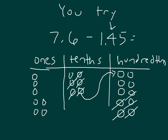For the tenths within the number we have 4 — 1, 2, 3, and 4. And in the ones place we have to take away 1 as well. That leaves us with 6 ones, and in the tenths place there's still 1 more left, and 5 in the hundredths place. So our answer is 6.15 or 6 and 15 hundredths.